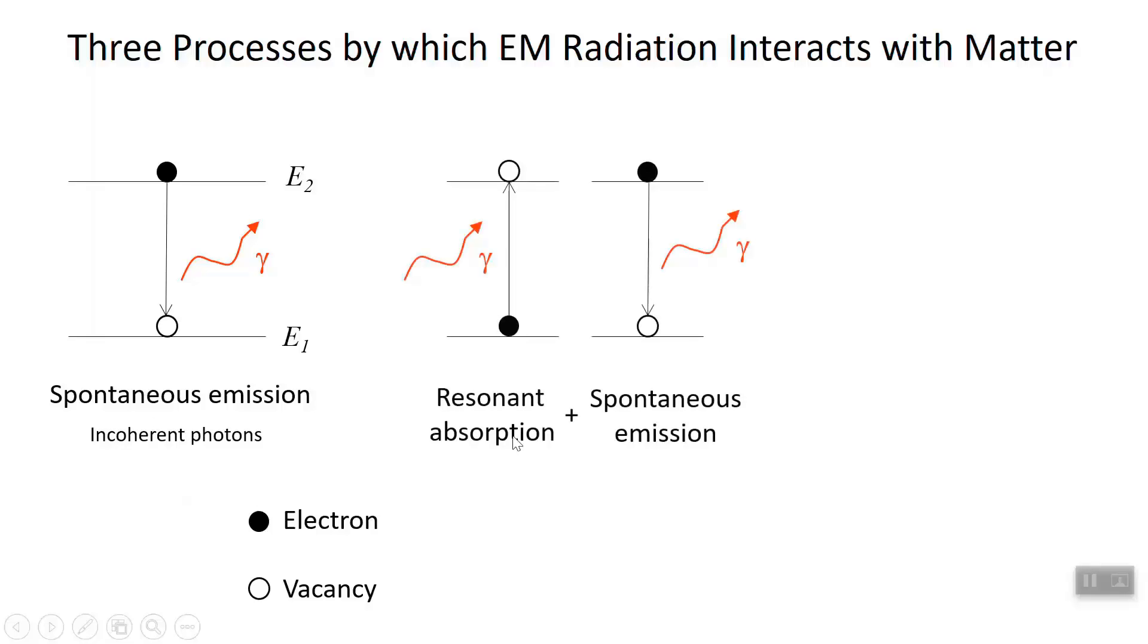A second thing that can happen is a photon comes along. So in the first case, the photon was generated in this decay. But here a photon comes along from the outside. It hits an electron that's in the ground state or the valence band. And it jumps up to a vacancy in the excited state or the conduction band.